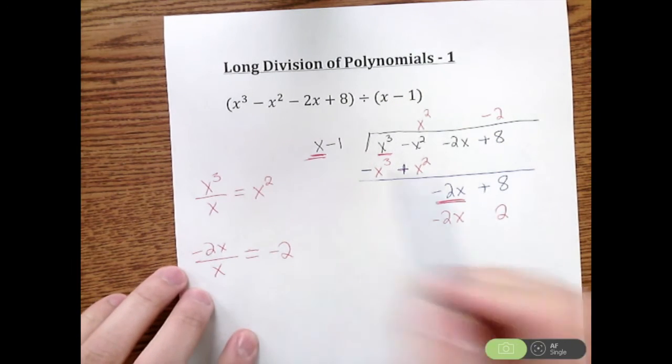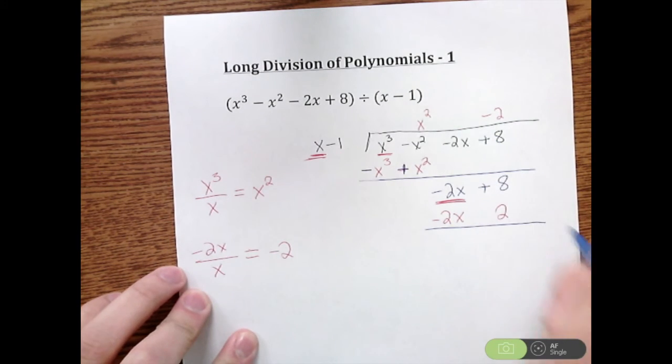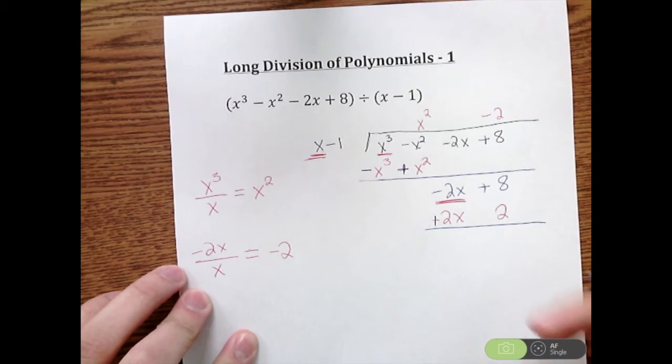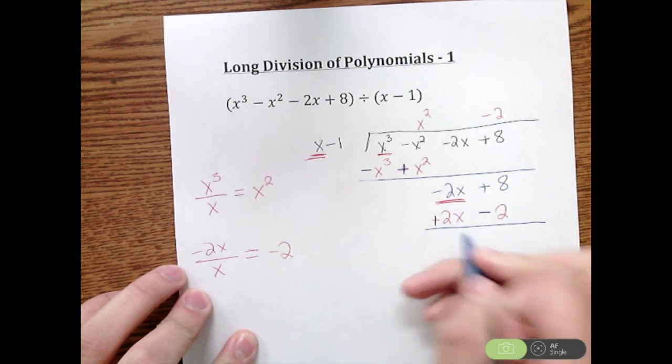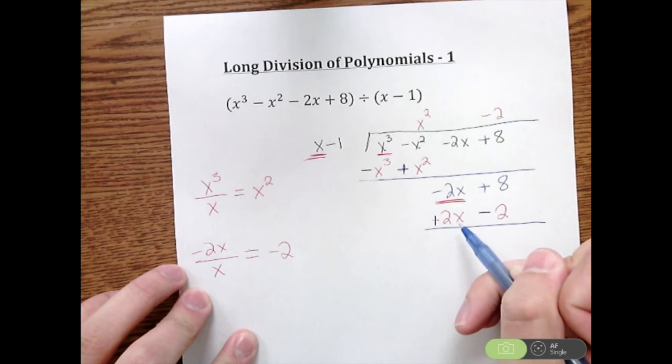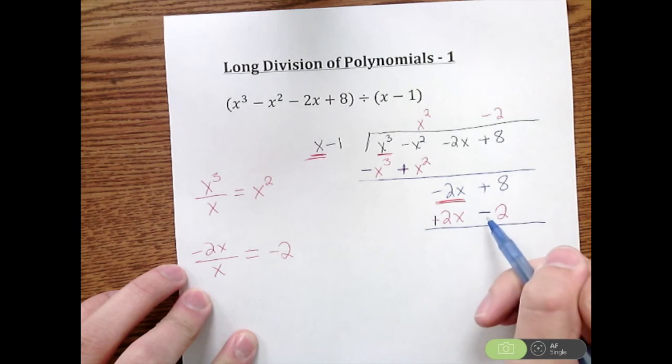After you multiply through, we are going to subtract here. So this becomes a positive 2X. This becomes a negative 2. Subtracting off everything there. A negative 2X plus a 2X is 0. 8 minus 2 is 6.